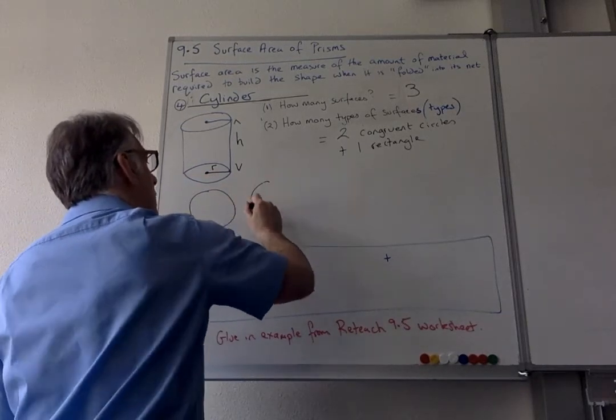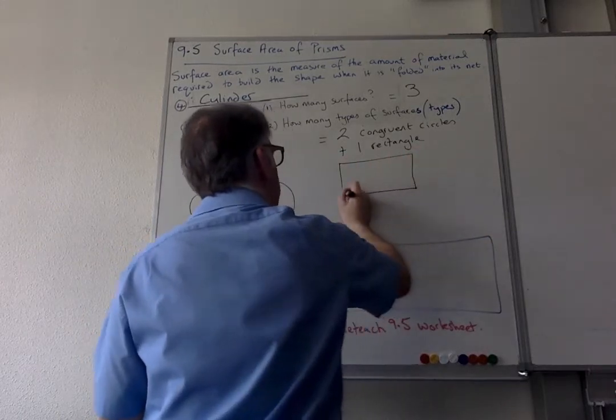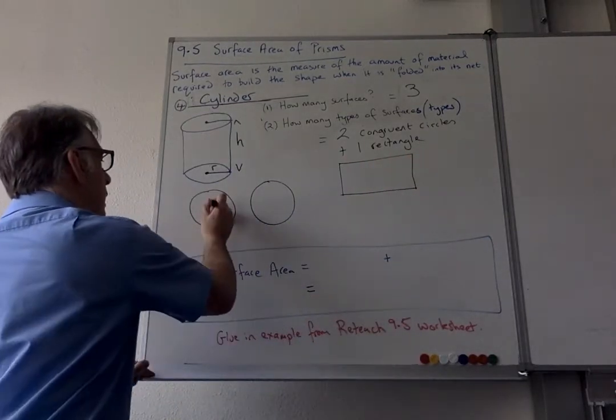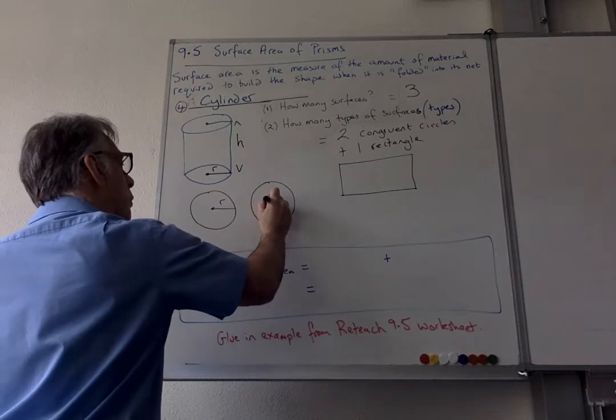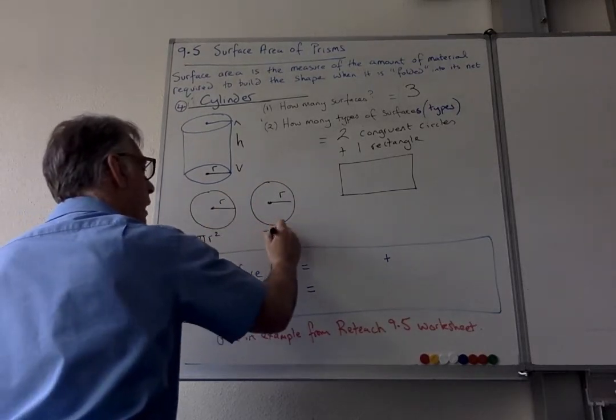Then I've got a circle, a circle, and then I'm going to have the rectangle here. Now we know the circle, that's R. We know the circle, that's R. So we know it's pi R squared and pi R squared, and those answers are the same.